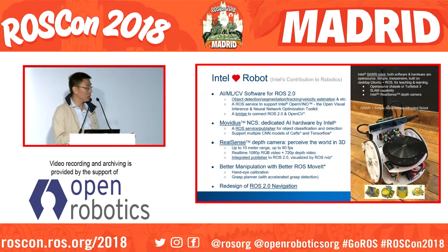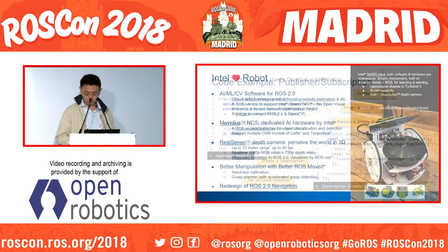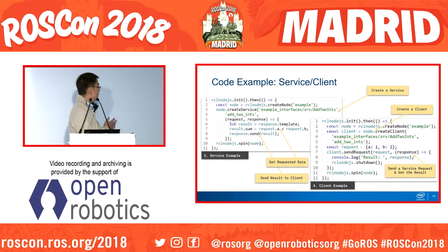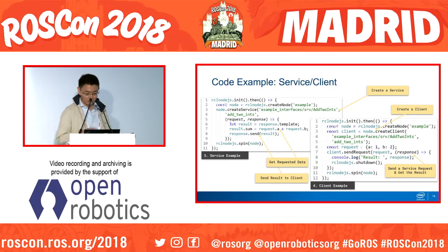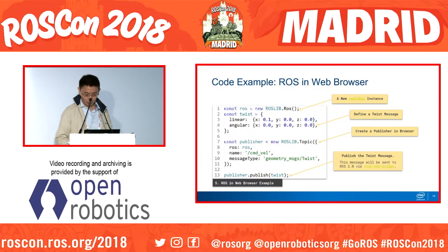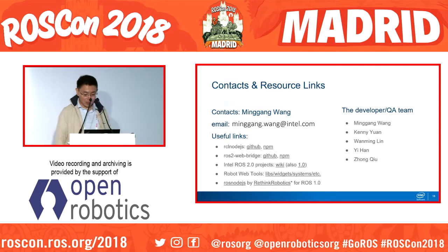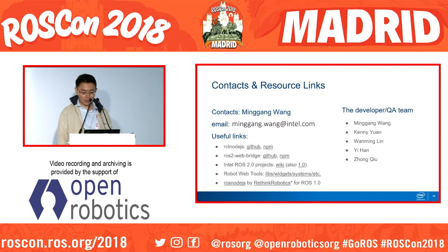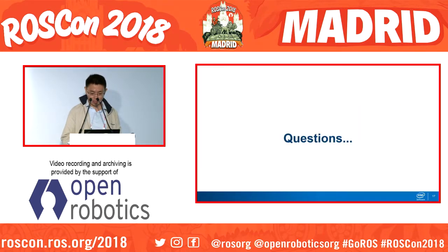These pages show some code examples of common usage in rclnodejs, like publishing a topic or sending a request to a service. You can see it's very simple and easy with very few lines of code. There is also an example of how to write a publisher in a browser. You can contact me through email, and I've put some useful links on this page, including packages for both ROS1 and ROS2 and packages from Intel. I'd like to thank all the team members for their dedicated work. That's it — thank you for your time.